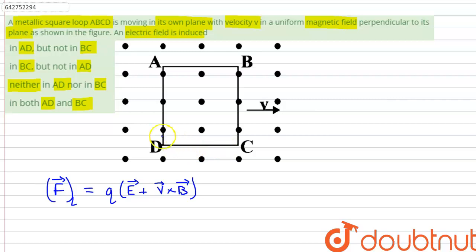This will induce an electric field in rod AD and BC in the square loop, but there will be no current flowing as the net potential difference is zero.